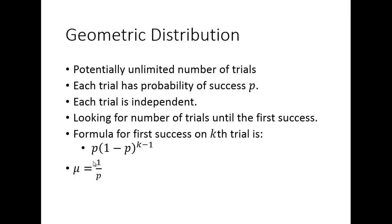The mean — the average number of trials until the first success — is 1 over p. The standard deviation is the square root of (1 minus p) over p. You don't need to know where these come from for this class; just look up or memorize the formulas.